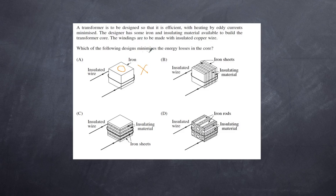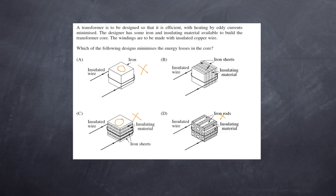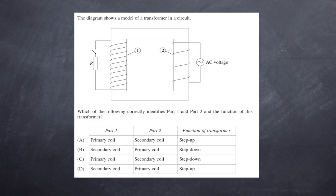The solid iron core provides no disruption to eddy currents, so it doesn't minimize losses. Placing insulation in the same plane still allows circular eddy currents. Iron rods may reduce losses slightly but don't adequately strengthen the magnetic field. Laminations interrupt the eddy current paths while still allowing the magnetic field lines to run through the core — so the answer is B.